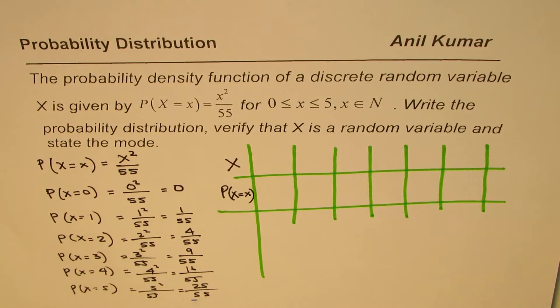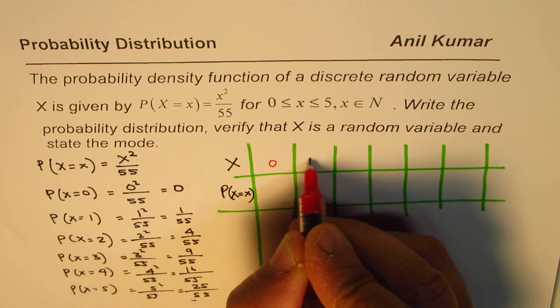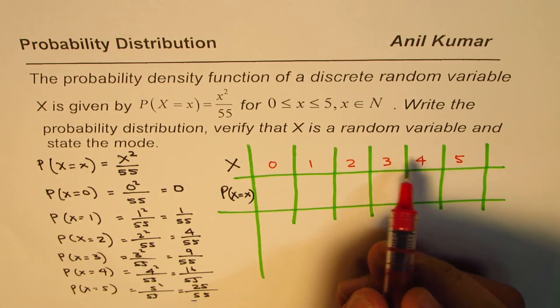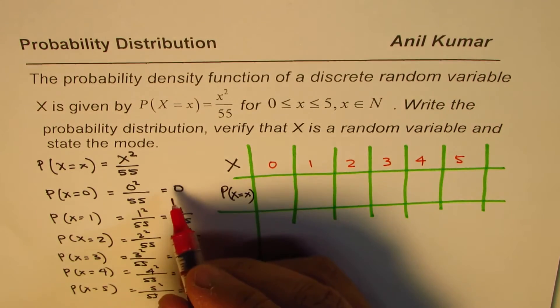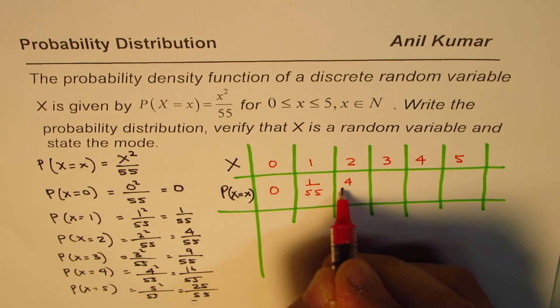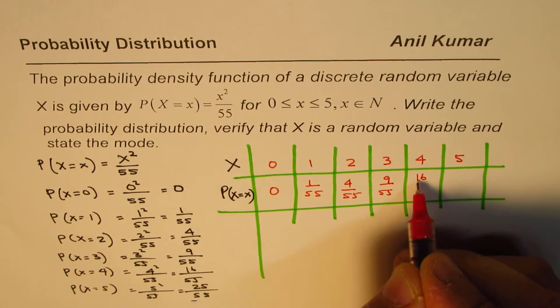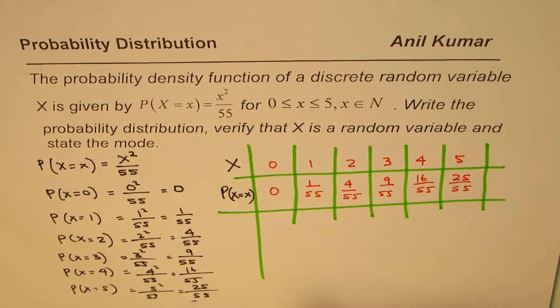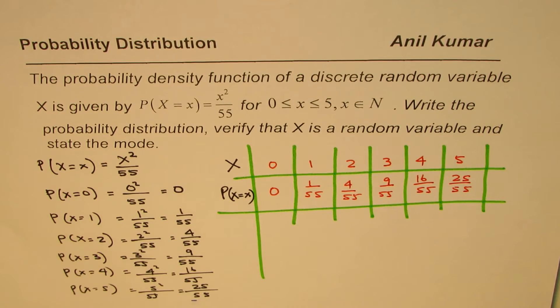In this, we can plug in the values which we have calculated in the table. So we have 0, 1, 2, 3, 4, 5. These are possible outputs for our random variable, and each has the probability which we have calculated. When we write it in this form, it becomes probability distribution.